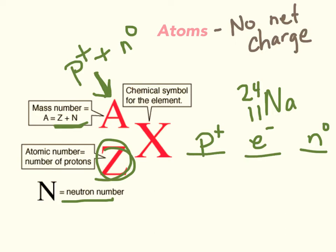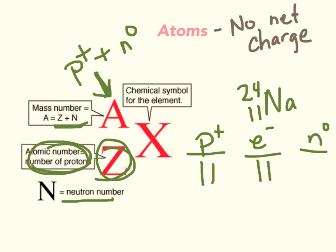Protons are always the atomic number, so there are 11 protons. Since this is an atom — and here's how you know it's an atom — it has no charge written up here. This is where a charge goes if there's an imbalance of protons and electrons. Since there's no charge, it has the same number of protons as electrons, so 11 electrons. To find the number of neutrons, the mass number is the protons and neutrons added together. So out of this 24, 11 are protons. We do 24 minus 11 to get 13 neutrons.